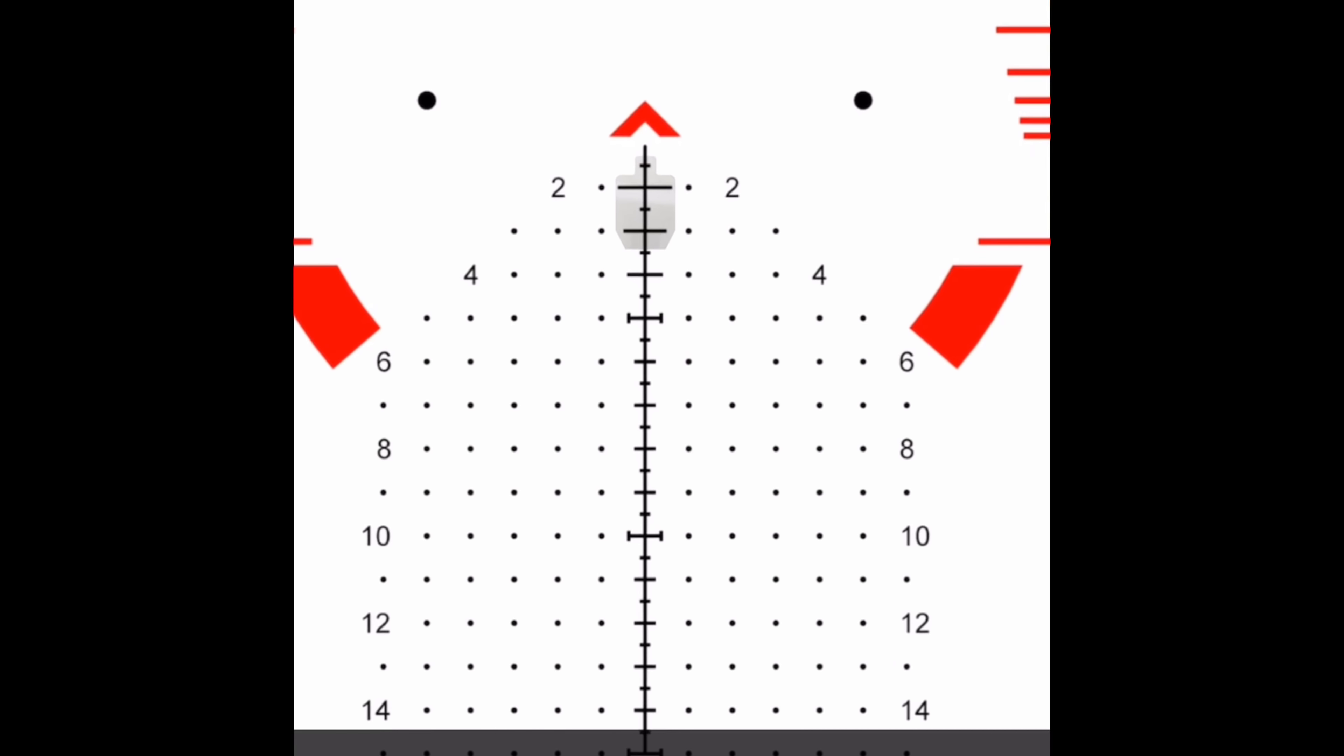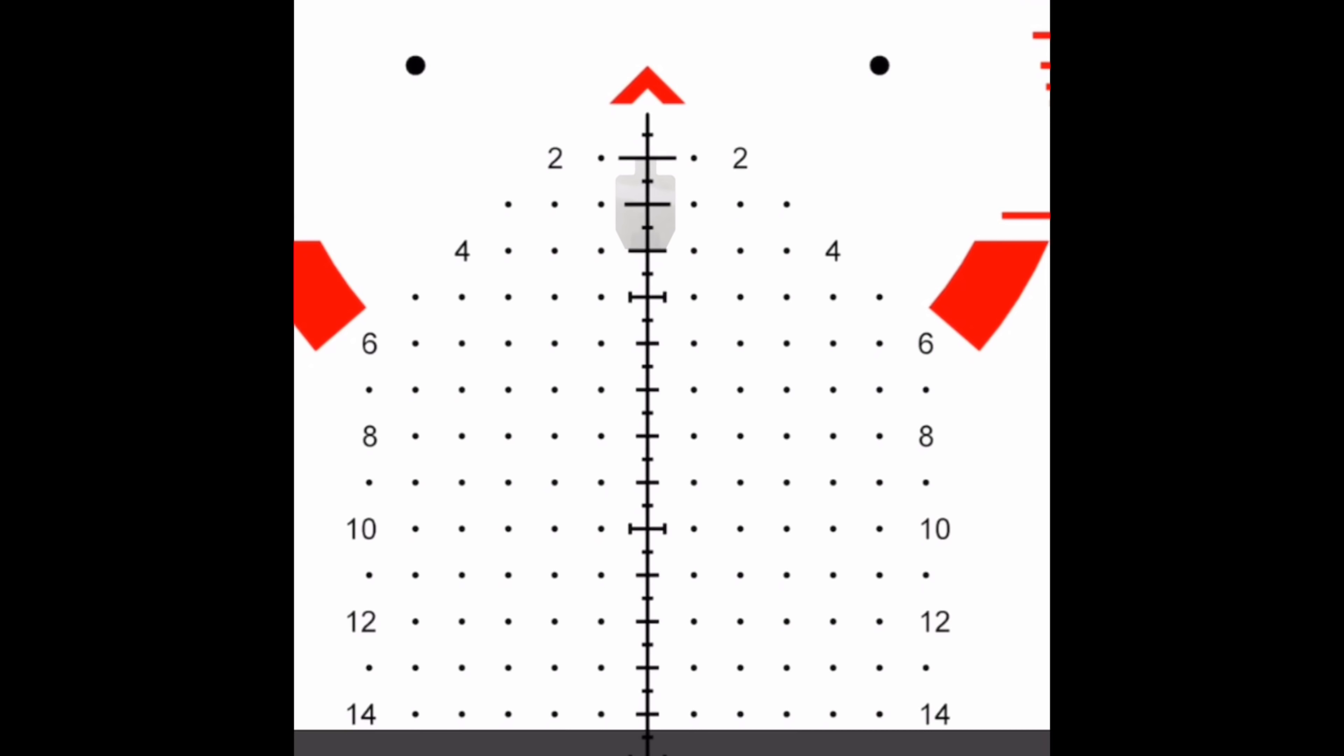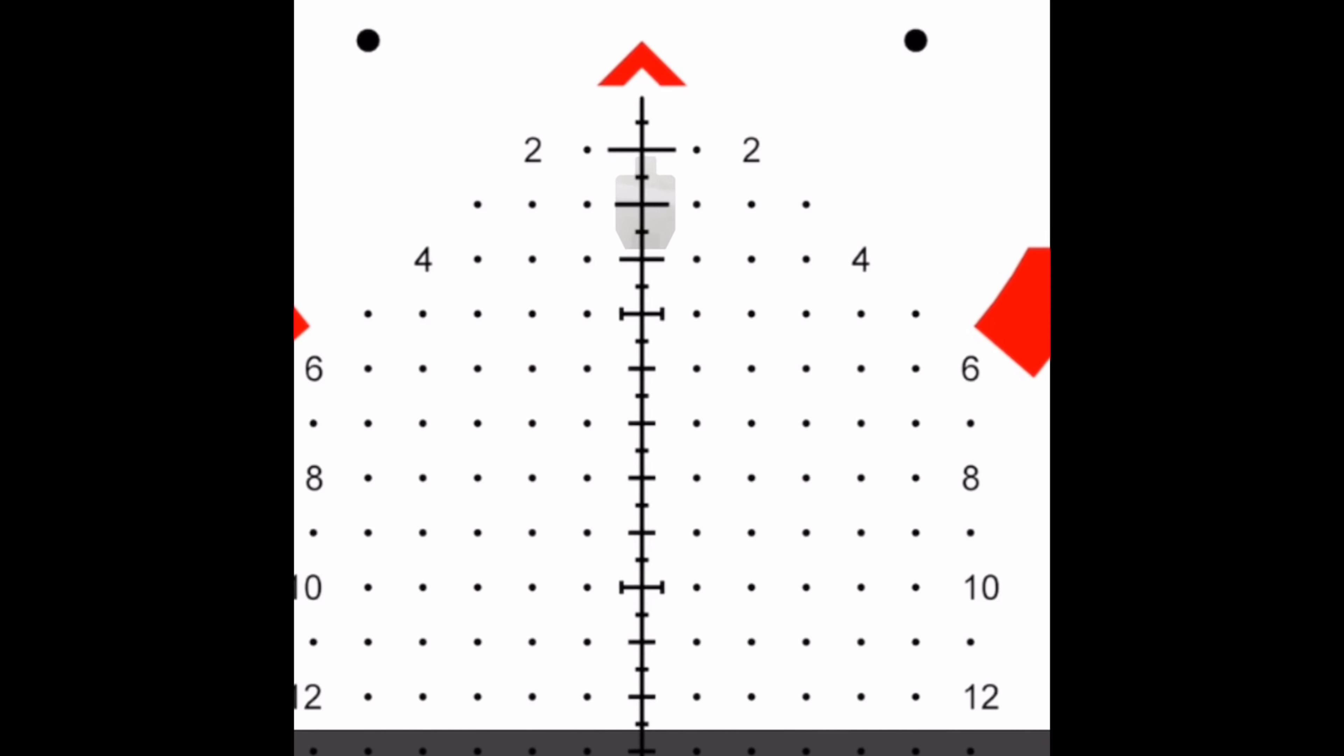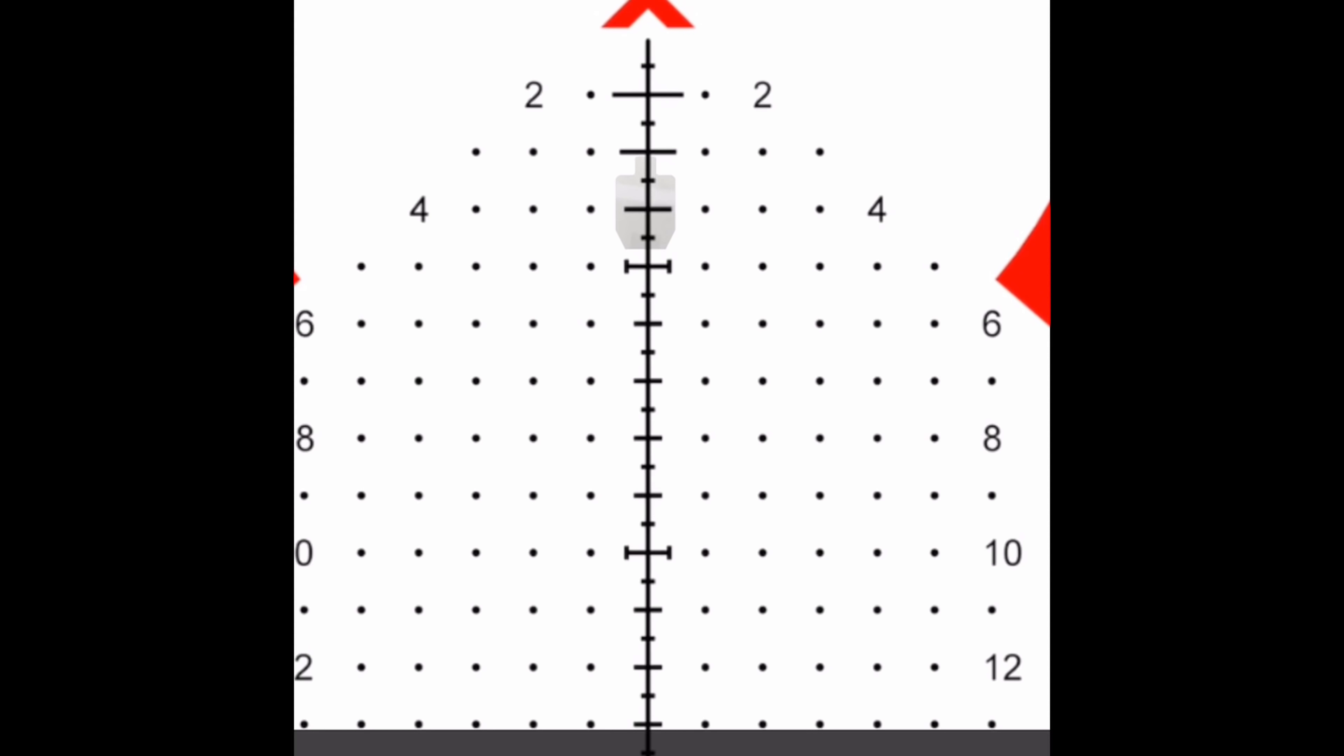You'd use the second mill typically for your 556 or 308. 556 with a 100-yard zero, 308 with a 50-yard zero. Your 500 yard is your third mill, and your fourth mill ends up being your 600 yard.